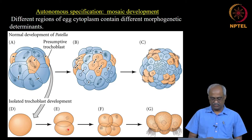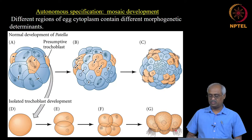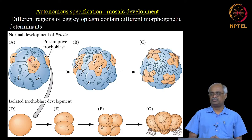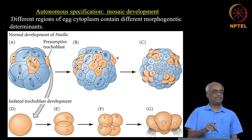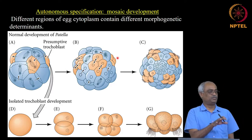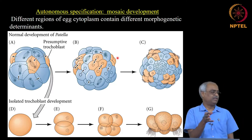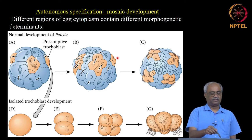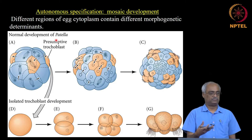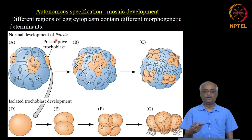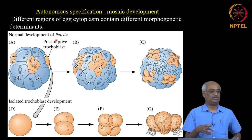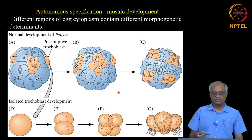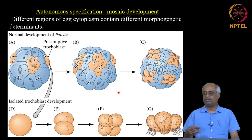When isolated, a cell divides into 2, then 4, and goes on to make only its designated structures — it does not make the other cell types. Each cell seems to have instruction to do what it is supposed to do, regardless of neighbors, and this we call autonomous specification. As a result, the final embryo is viewed as a mosaic of different structures put together with no connections, which is why this is called mosaic development.